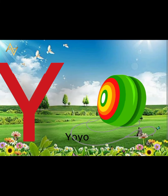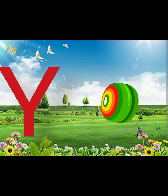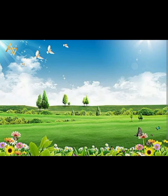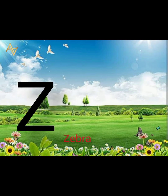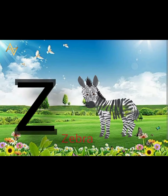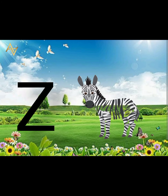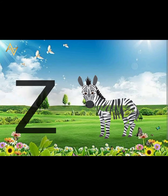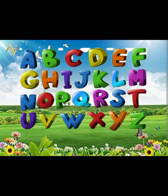Y is for yo-yo. Y, y, yo-yo. Z is for zebra. Z, z, zebra. The alphabet, A to Z — the alphabet will help me learn to read.